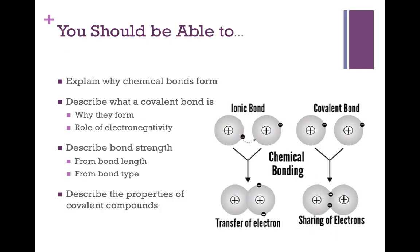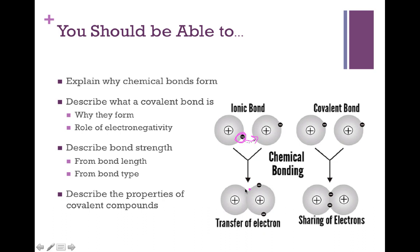That brings us to the end of the video. At this point you should be able to explain why chemical bonds form, describe what a covalent bond is, explain why covalent bonds form as opposed to ionic bonds and the role electronegativity plays, describe relative bond strength in terms of bond length and bond type, and be familiar with the properties covalent compounds tend to have. The graphic to the right compares ionic and covalent bonding: in ionic bonding there's an exchange of electrons creating charge — one atom becomes positive and one negative, and those opposite charges pull the atoms together. In covalent bonding, instead of exchanging electrons, we get sharing of electrons, and the atoms are held together by staying in close proximity to keep sharing.